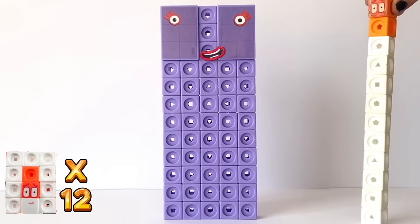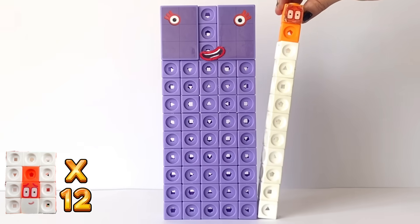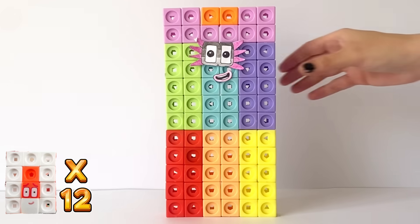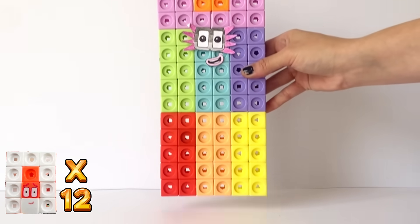So next we have 6 times 12 equals 72. And 72 has a grey and pink mask with the Octoblock spikes, and that's because 72 is also 8 lots of 9.